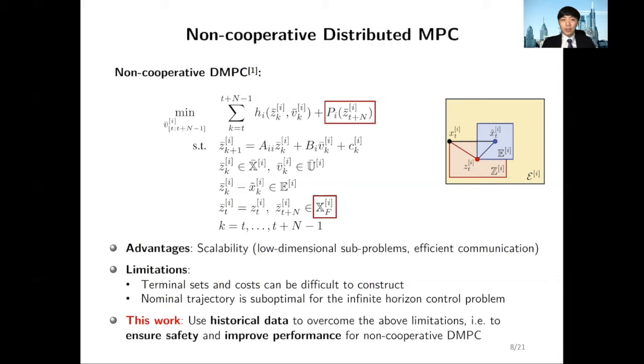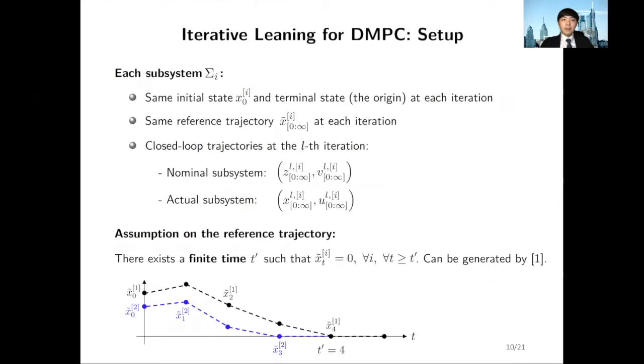These limitations motivate our work, and we will show that by constructing the terminal cost function and safe sets in a data-driven fashion, we can easily ensure safety and improve control performance for the system.